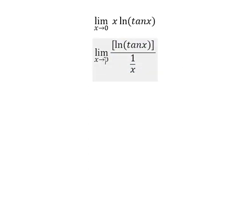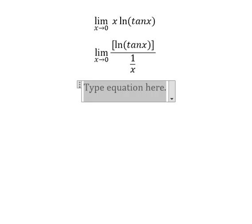When x approaches zero, you got zero inside here. We have negative infinity. One divided by x you got infinity. So in this one we have infinity over infinity.